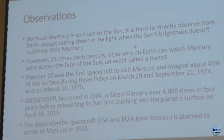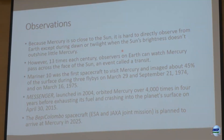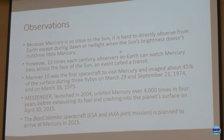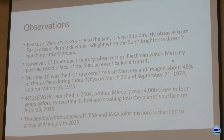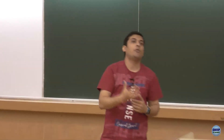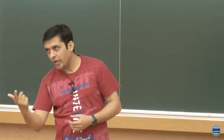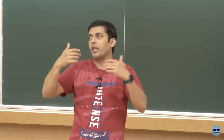Mercury is difficult to observe because it's so close to the sun — it saturates ground-based equipment and satellites. The best observation windows are dawn or dusk, when both the sun's intensity is lower and Mercury is rising or setting. Additionally, 13 times per century Mercury transits directly in front of the sun, creating an excellent opportunity to use solar blockers and study Mercury in detail.